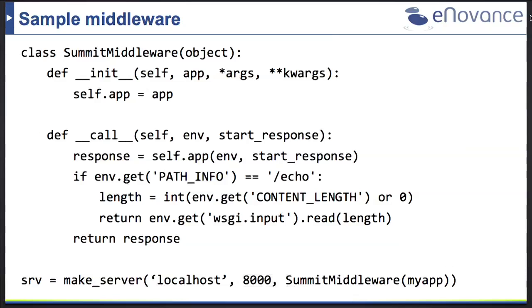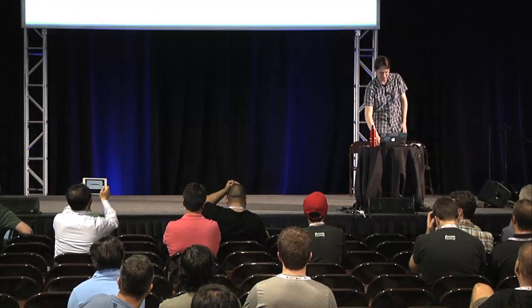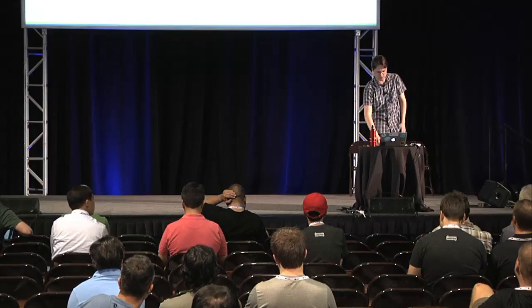One drawback is that if you add more and more middlewares, you end up with a very long line in your server call because each middleware needs to call the next one. You have configuration like server name and port number embedded in your Python code, which you don't want — you want a separate configuration file. We also want testing for our middleware and a better way to deploy it on the server.